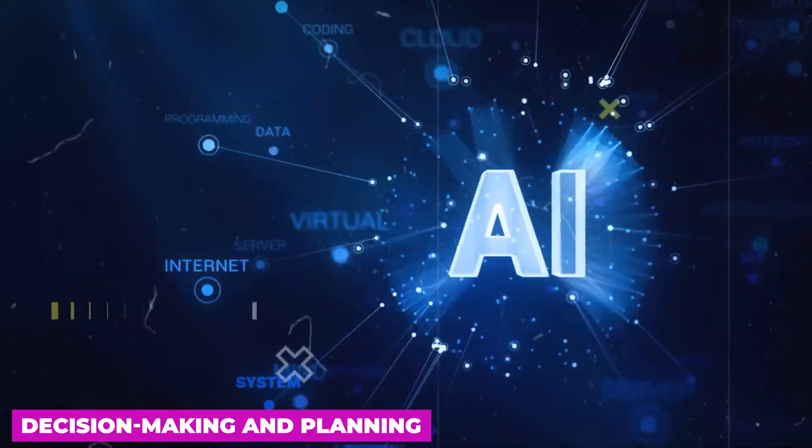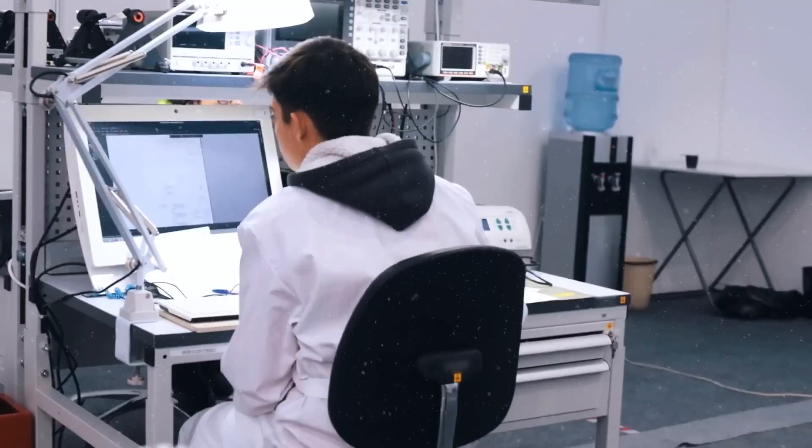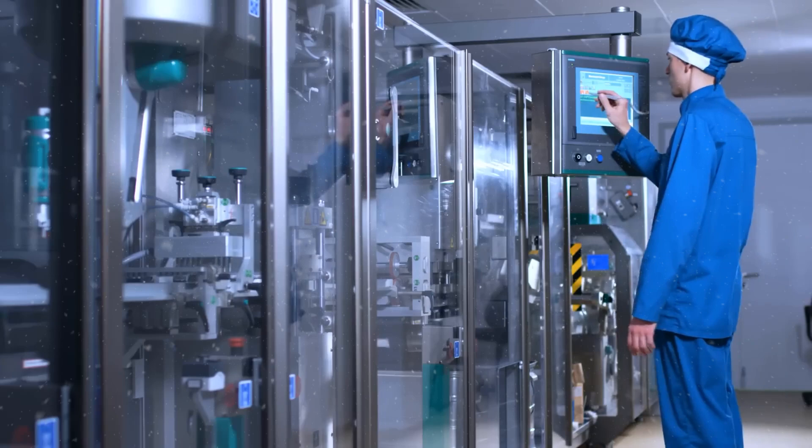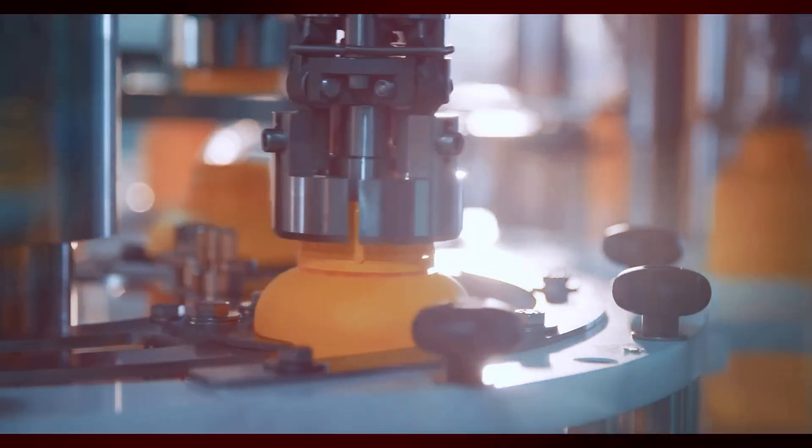Decision Making and Planning. Robotic systems equipped with AI algorithms can analyze vast amounts of data to make intelligent decisions and plan optimal actions.